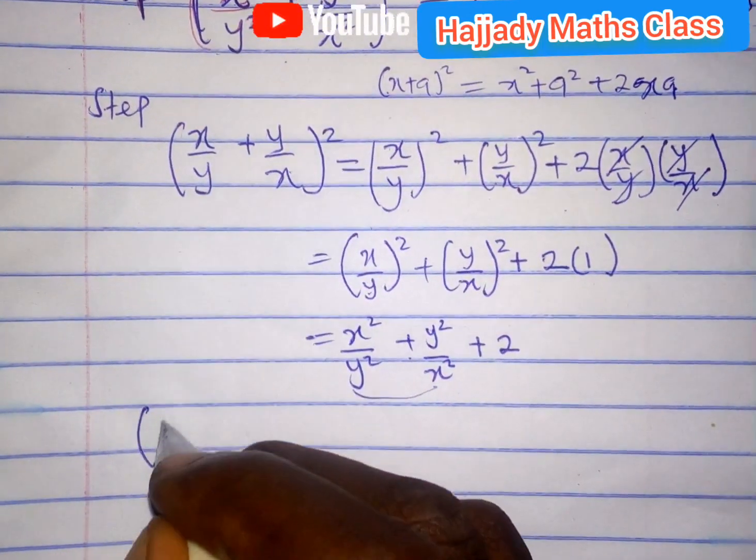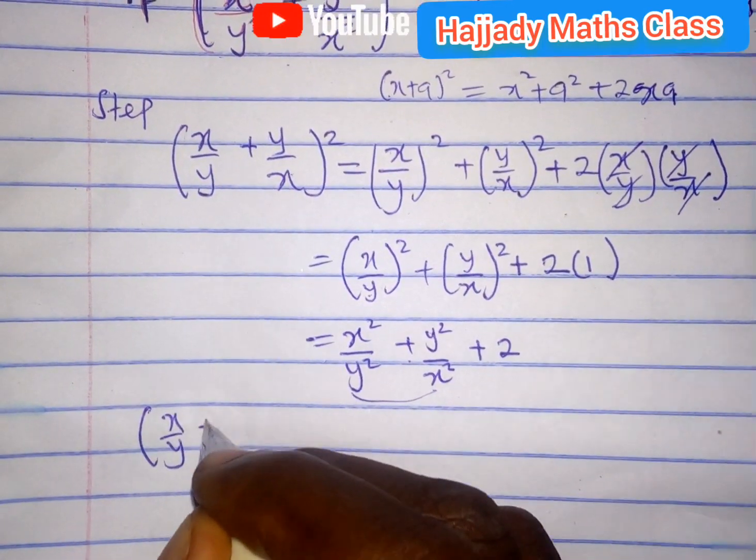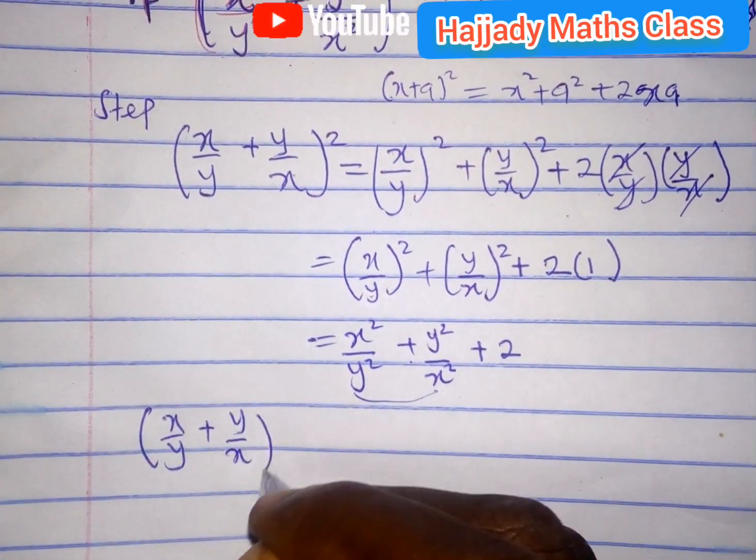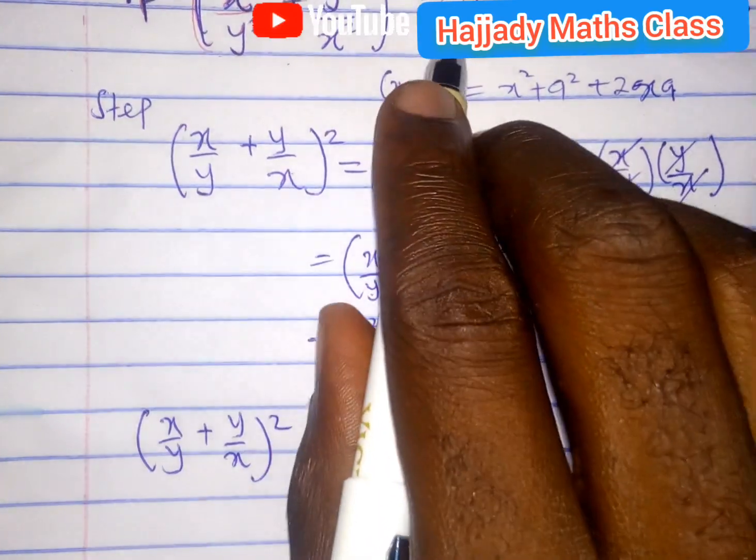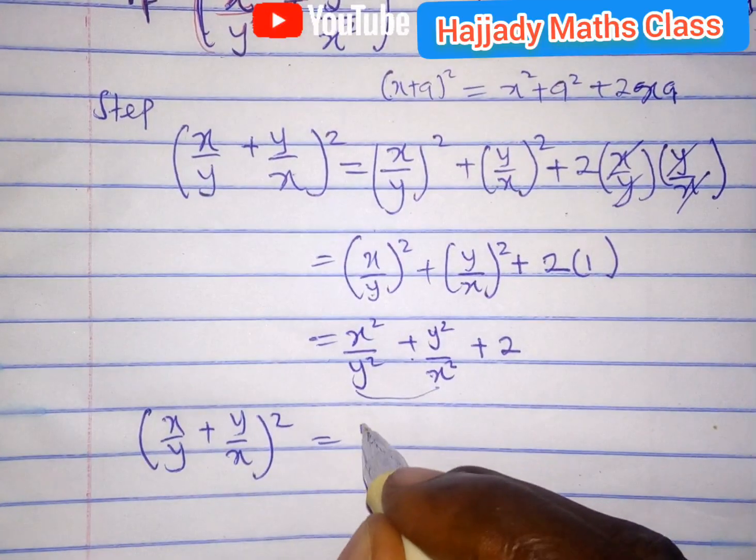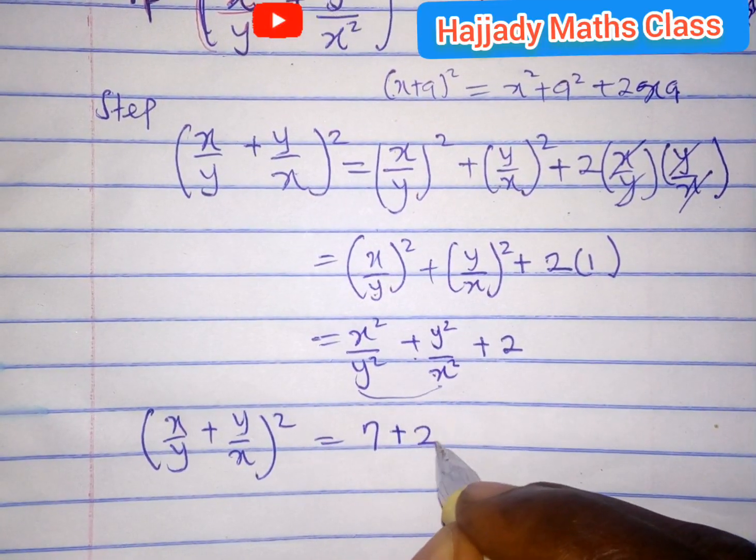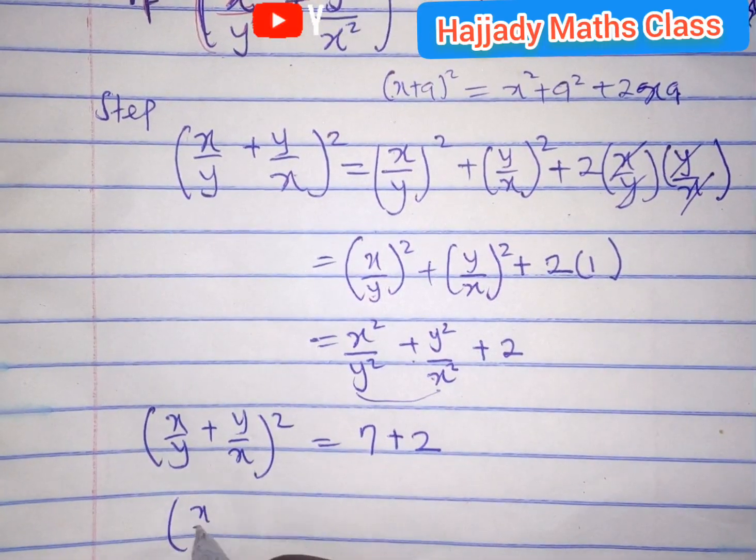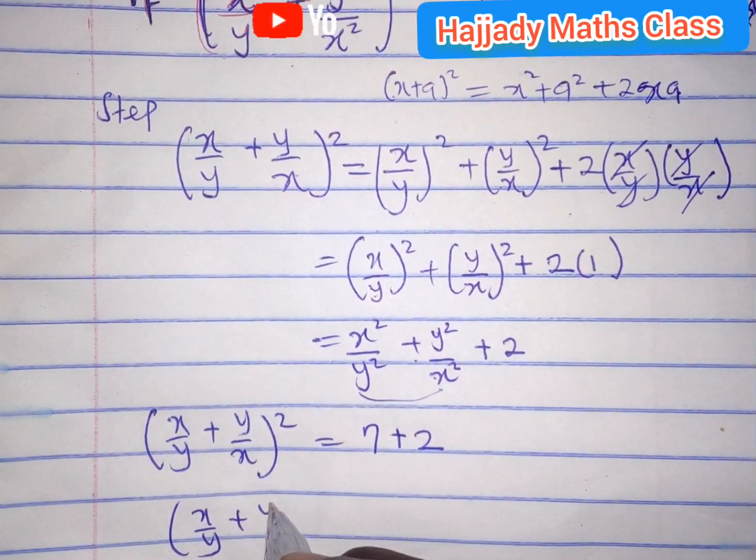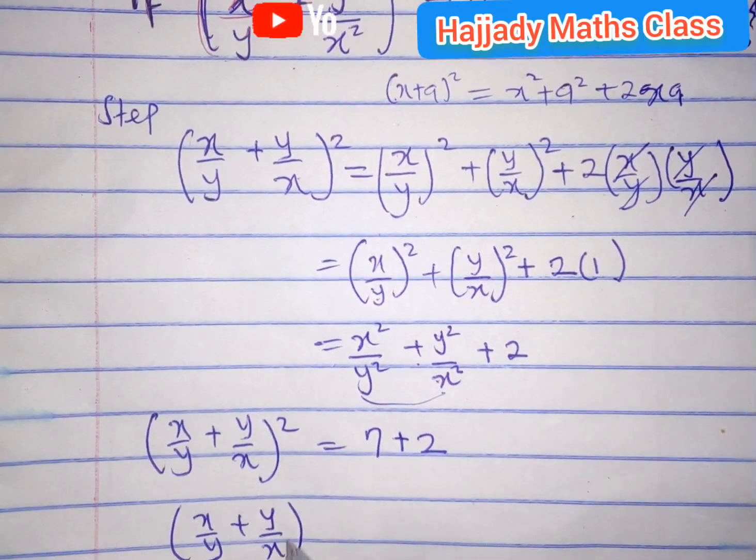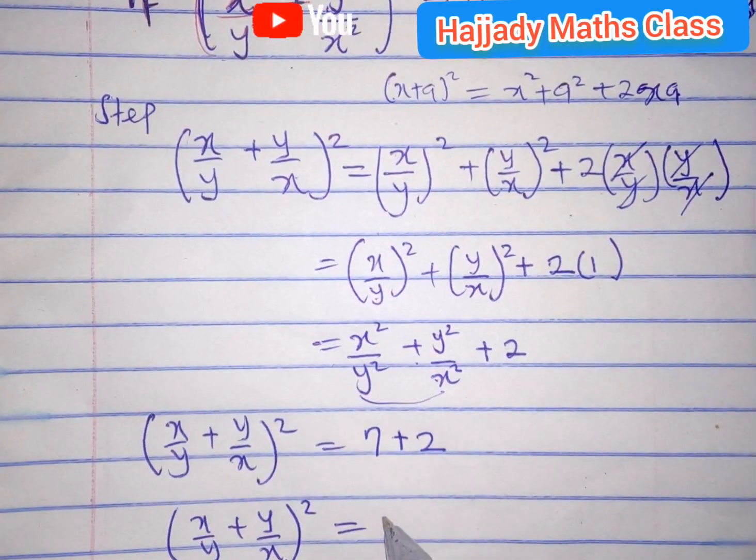So we have x over y plus y over x. So by substituting this, we are going to have 7 plus 2. So our x over y plus y over x all squared gives 9.